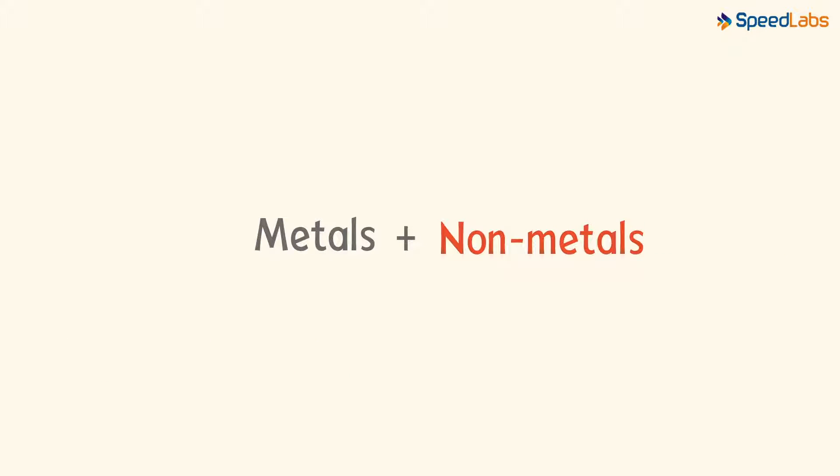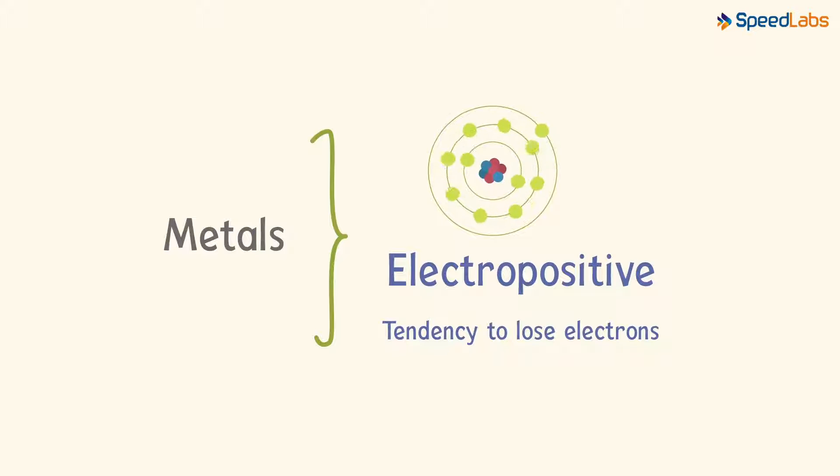To understand how they react, we just need to know one simple concept. And it's the fact that metals are electropositive in nature. What does that mean? It means that they have the tendency to easily lose electrons and form cations.